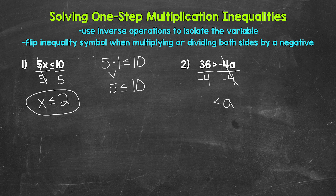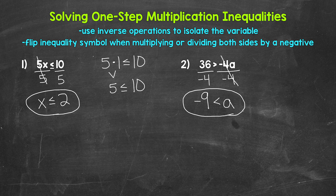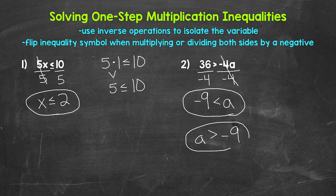The symbol flips, and on the left side 36 divided by negative 4 gives us negative 9. So a is greater than negative 9 — that's our answer. We can also rewrite this with the variable coming first, which can make it easier to work with. Just write a first, then make sure the symbol is going the correct way — it's opening up towards a, so a remains greater than negative 9. Either way is correct.